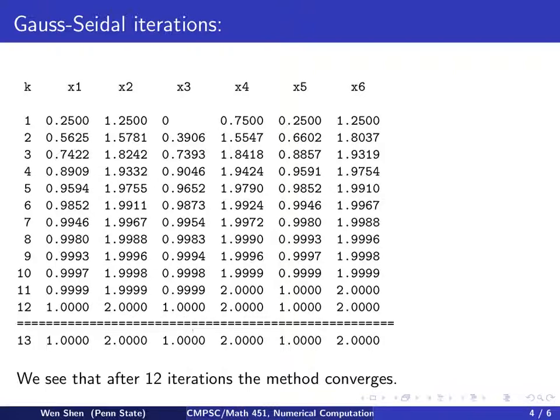showing that after 12 iterations, we get this number. So it's 1.0000 here, 2.0000 here, and 1 and 2 and 1 and 2. And that is good enough. It passed the tolerance criteria. So it converges after 12 iterations. Not bad.